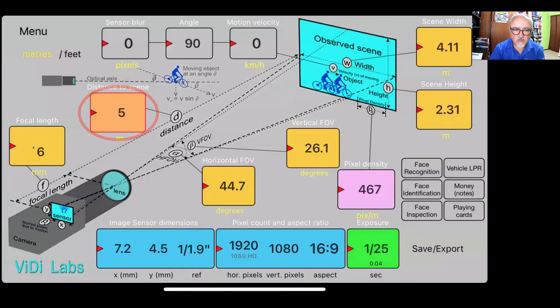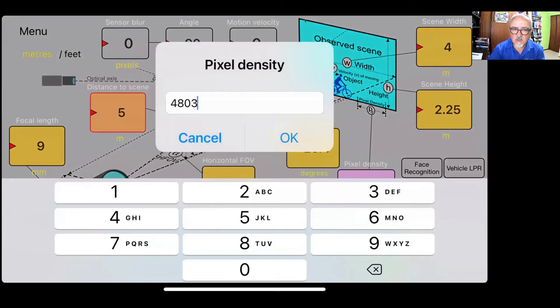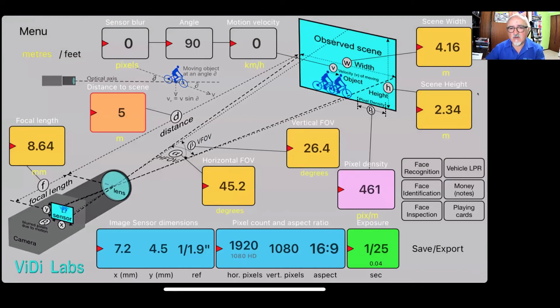Now we can change the focal length to whatever we want. But we are not going to now know what focal length we need because we need to achieve 461 pixels per meter density to get the software to work properly. In Videolabs calculator, you can change any value as long as it is not locked. If we double click now on the pixel density, which was 480, I will now enter here 461, which is the pixel density we calculated. If I click enter, that tells me now, change the focal length to 8.64 millimeters. And obviously it changed accordingly, the horizontal angle of view, the scene width, the scene height.